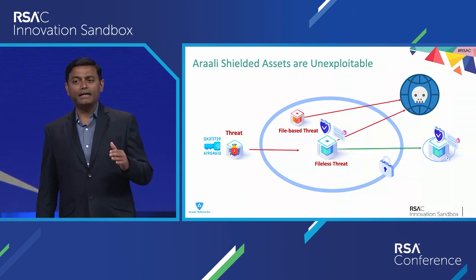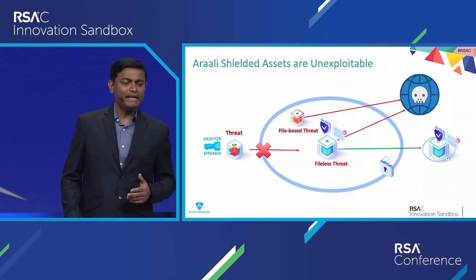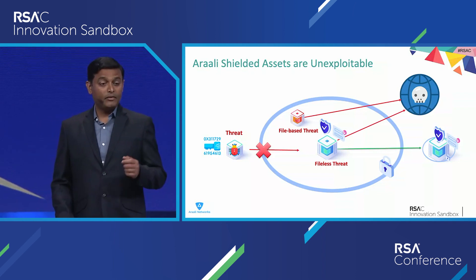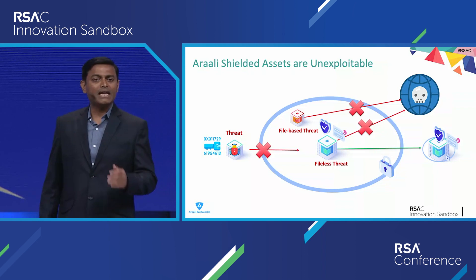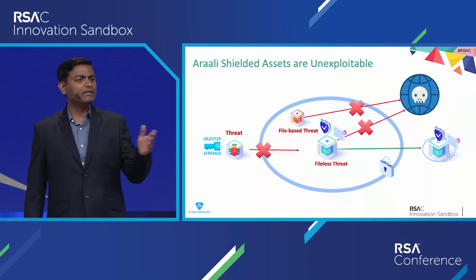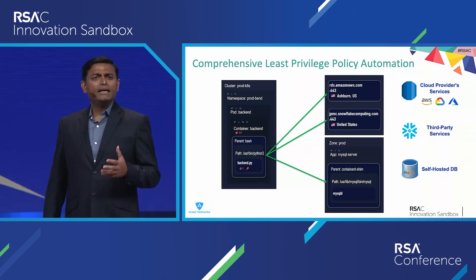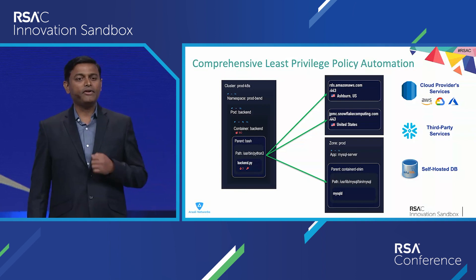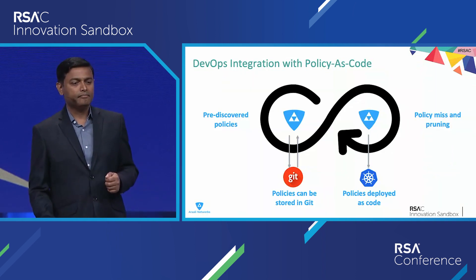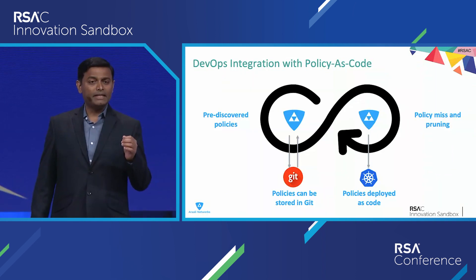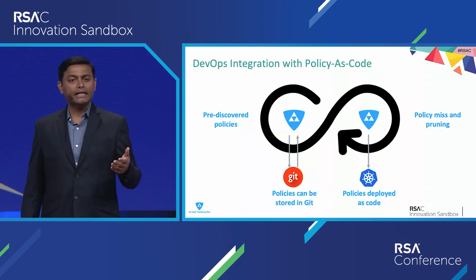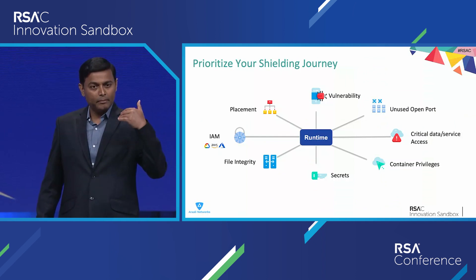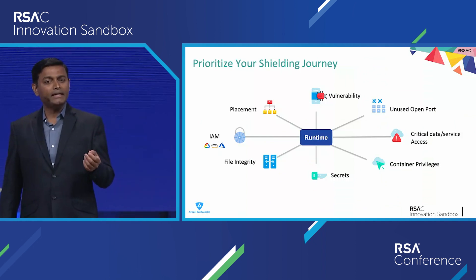Assets protected by Aralee are unexploitable. Defending inside-out, we don't talk to strangers, even if they have stolen credentials. We prevent both file-based and file-less malware from establishing backdoors or interacting with services in your environment. Deny by default is aspirational. The hard part is policy discovery, which we automate continuously and consistently. New code comes in with policies pre-discovered in dev and deployed alongside your apps. For existing code, we help you shield in a prioritized way by identifying your highest-risk assets.